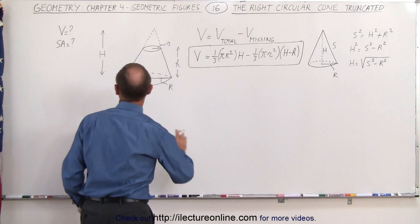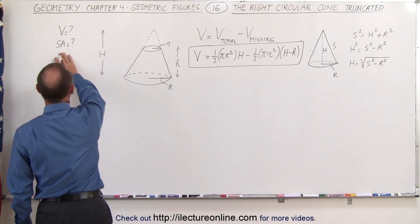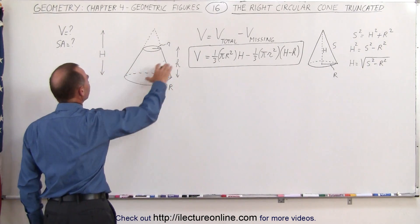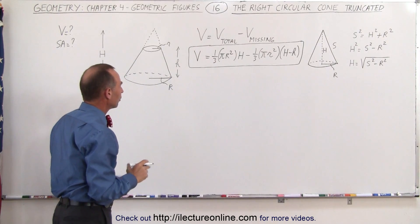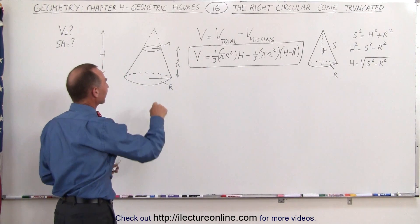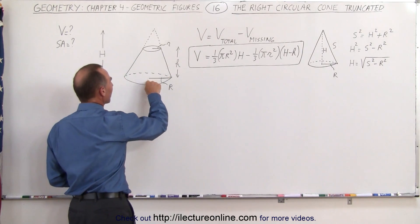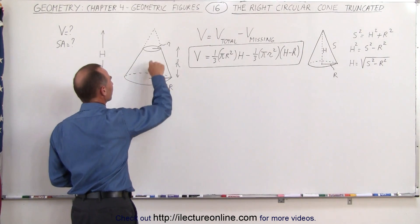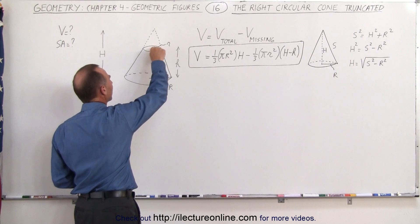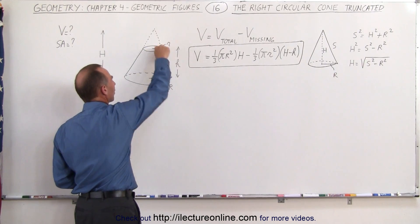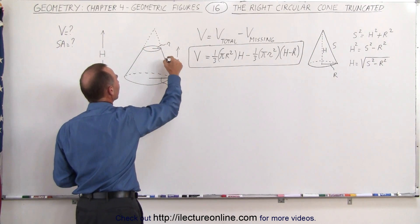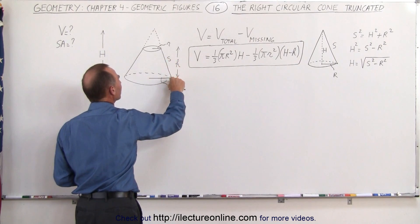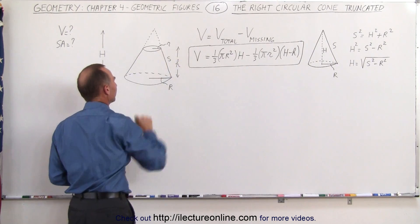Next we're trying to find the surface area of the truncated right-circular cone. To do that we need to find the surface area of the bottom, the surface area of the top, and the surface area of the side — this little piece here from there to there.